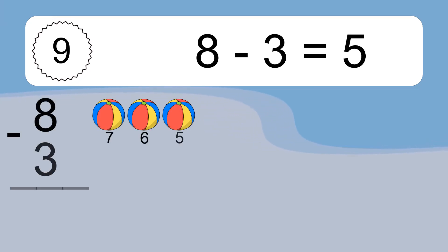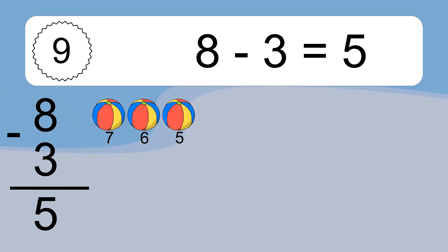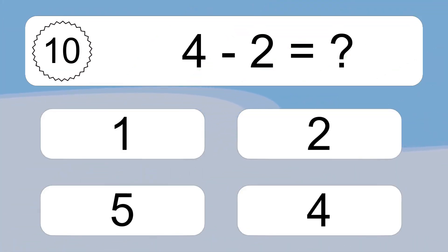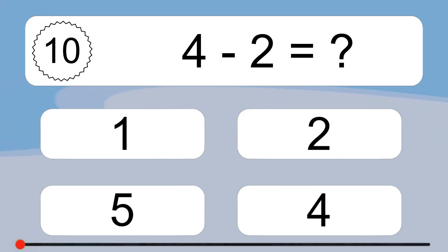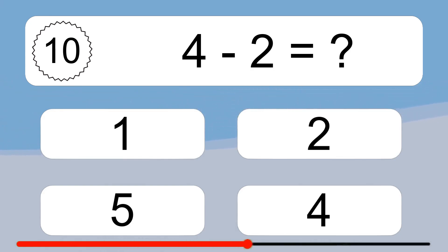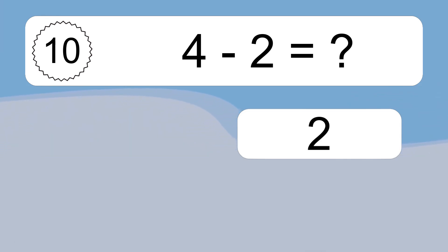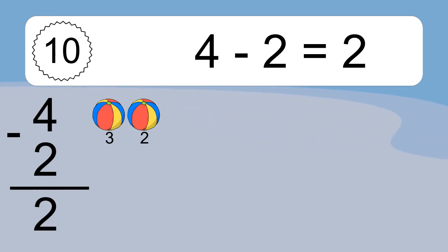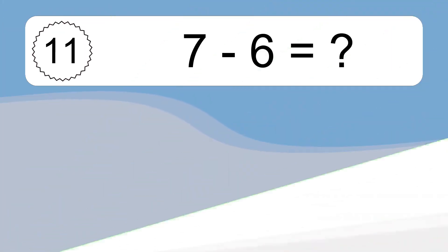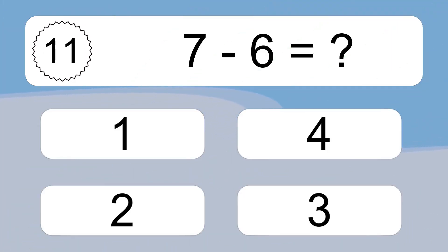8 minus 3 equals 5. Let's count it. 7, 6, 5. 4 minus 2 equals what? 4 minus 2 equals 2. Let's count it. 3, 2.